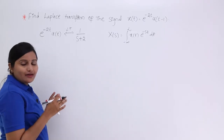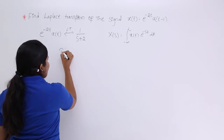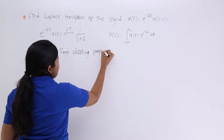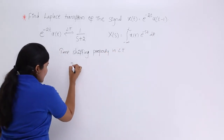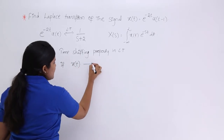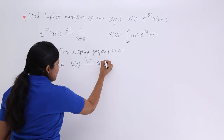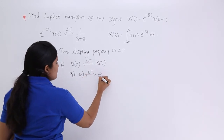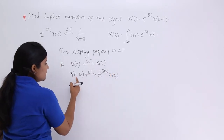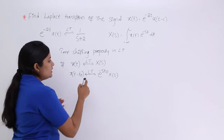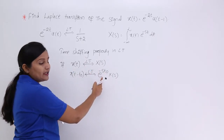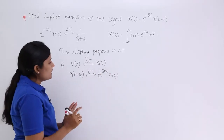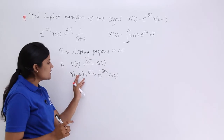The time-shifting property of the Laplace transform states: if x(t) has Laplace transform X(s), then the Laplace transform of x(t - t₀) is e^(-s·t₀) · X(s). If you delay by t₀ seconds, the transform of the original signal is multiplied by the decaying exponential e^(-s·t₀). The sign of t₀ in x(t - t₀) corresponds directly to the sign in the exponent e^(-s·t₀).